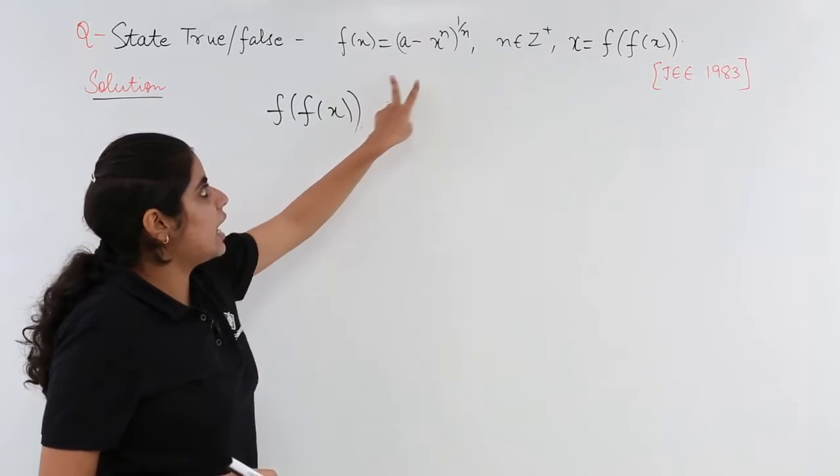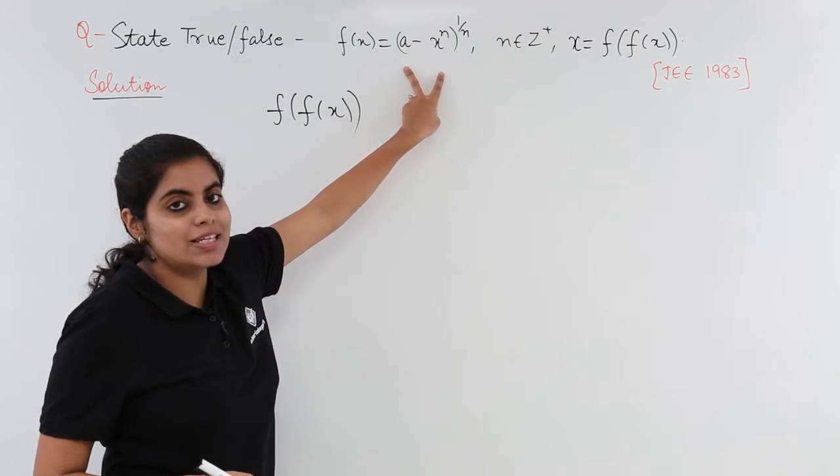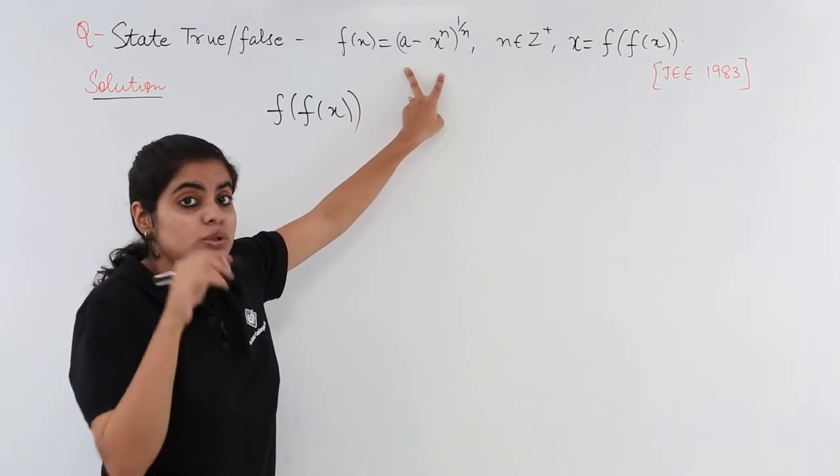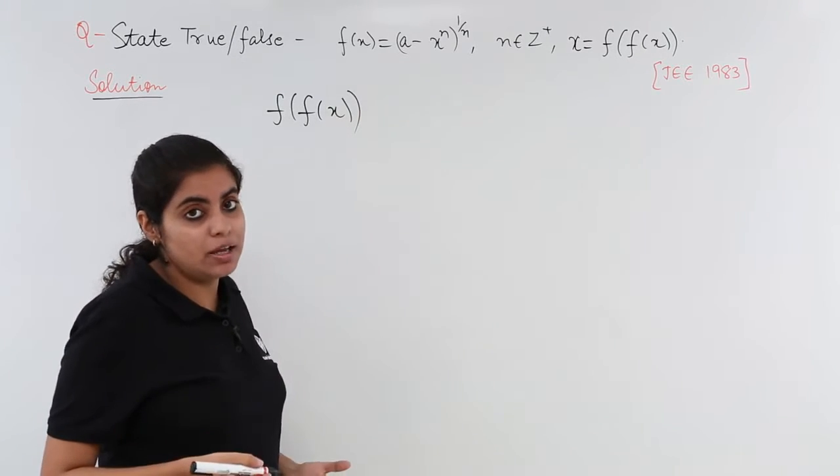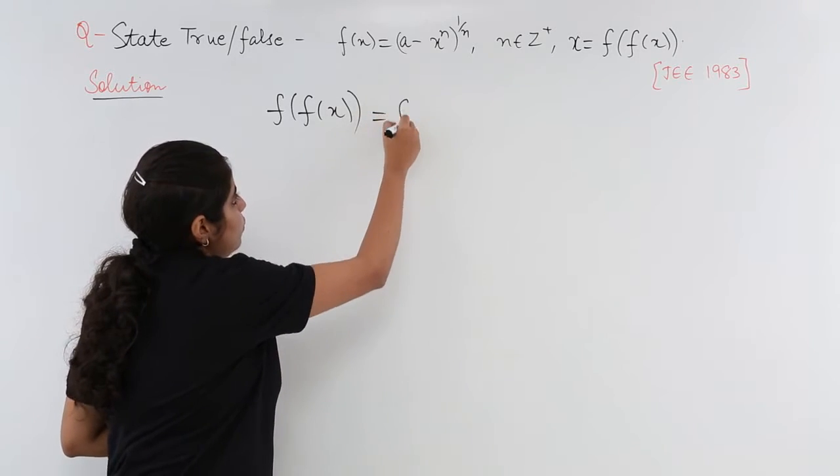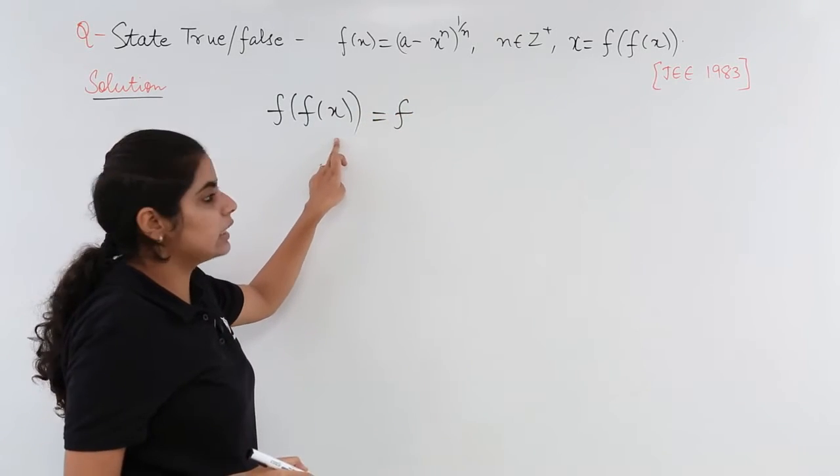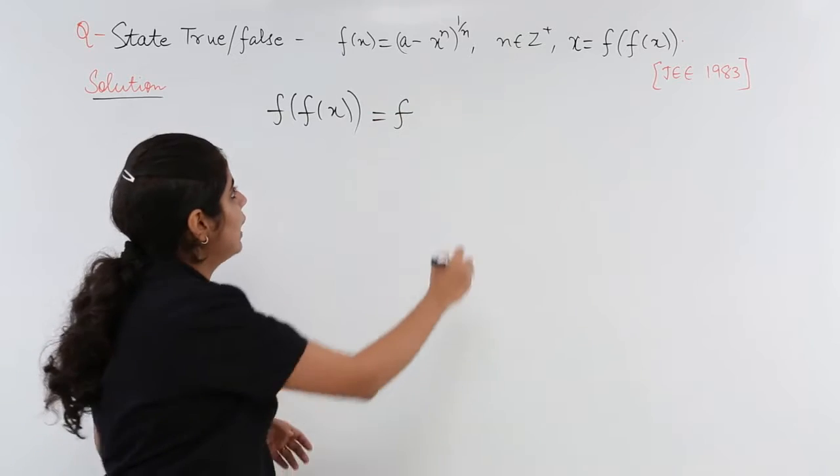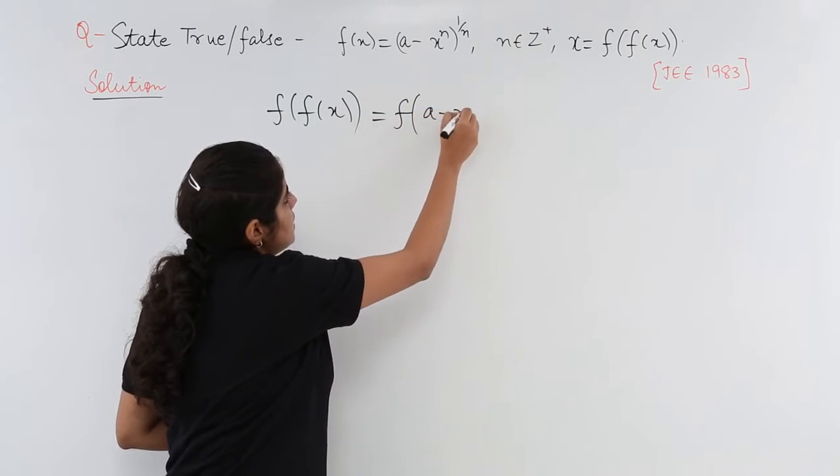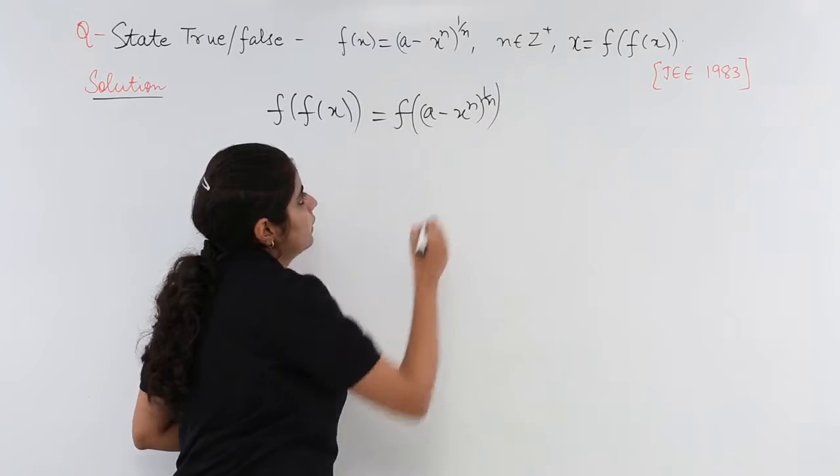That means wherever I have (a - x^n)^(1/n) is my f(x). So I have to do f and internally I have f(x). Put the value of f(x): (a - x^n)^(1/n).